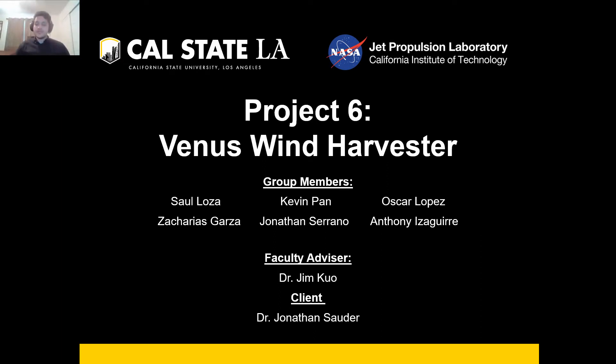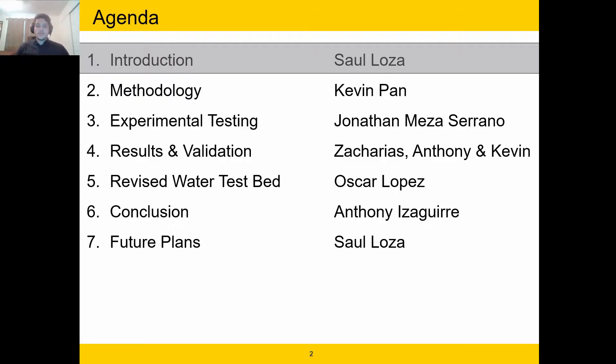Hello, everyone. This will be the presentation for project number six, the Venus Wind Harvester. The group members include myself, Saul Loza, as well as my team members Kevin Pan, Oscar Lopez, Zacharias Garza, Jonathan Serrano, and Anthony Zagir. The team's faculty advisor is Dr. Jim Quo and the client is Dr. Jonathan Sautter with JPL. I will be presenting the first section of this presentation in which I will be introducing the project itself.